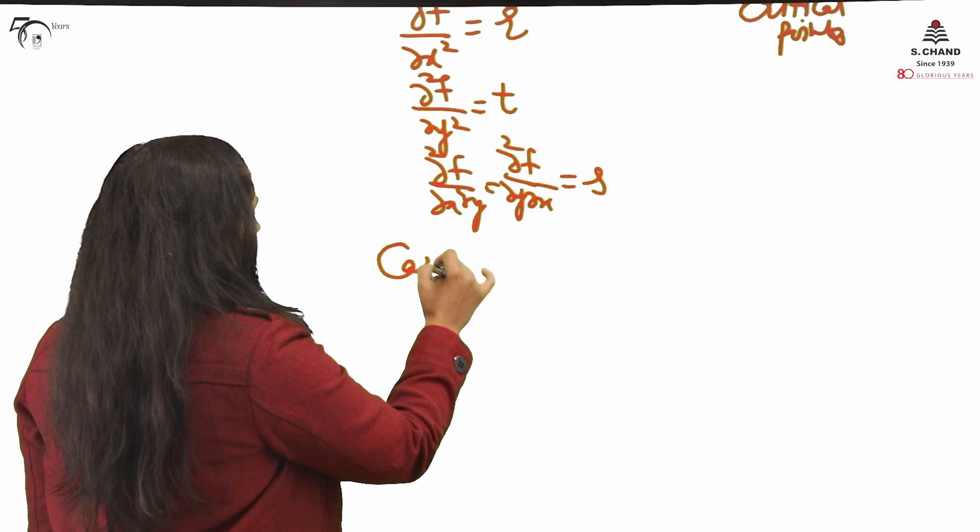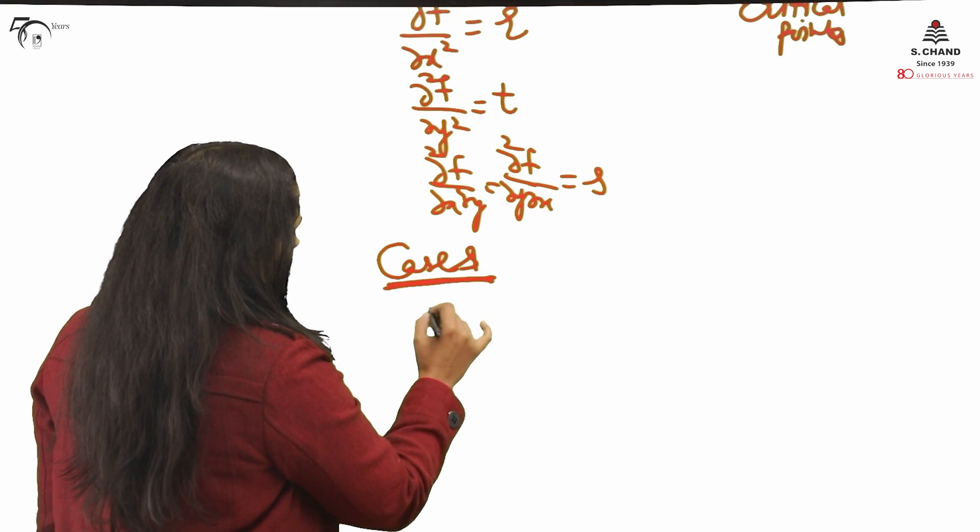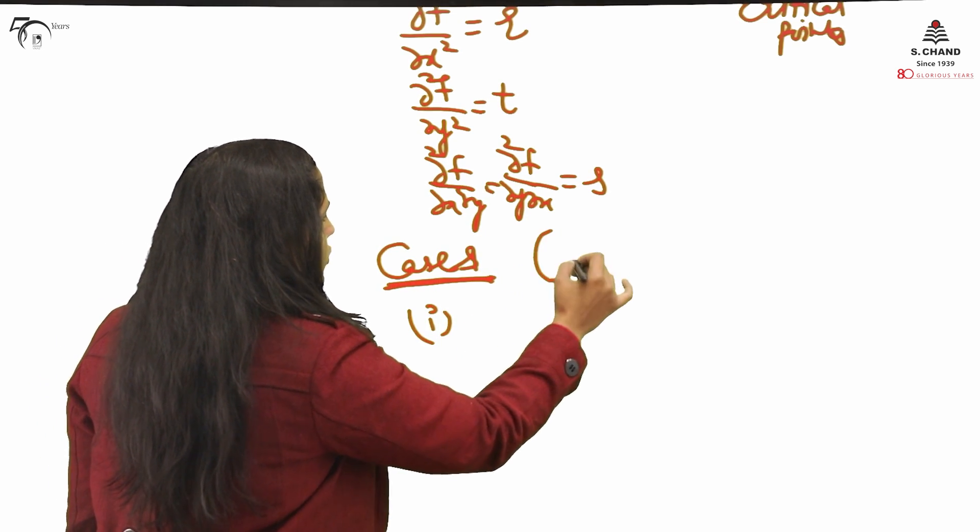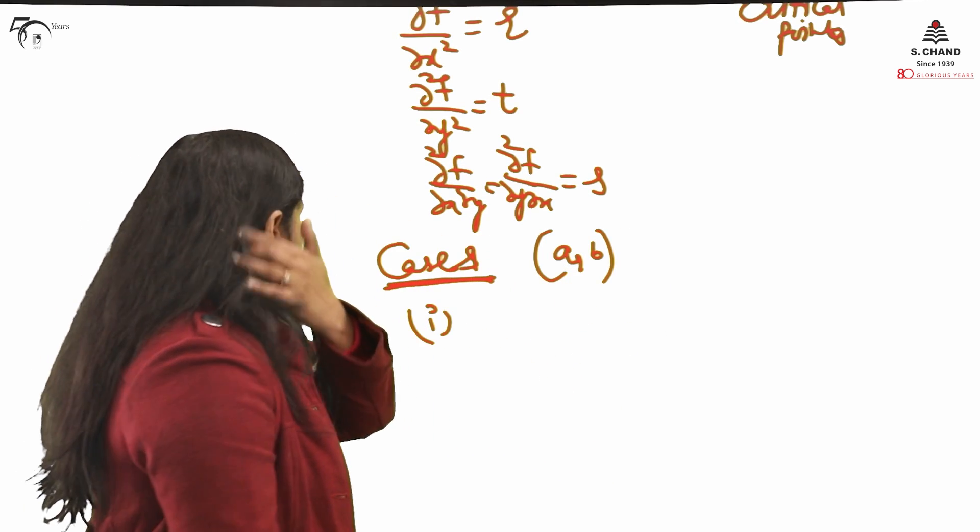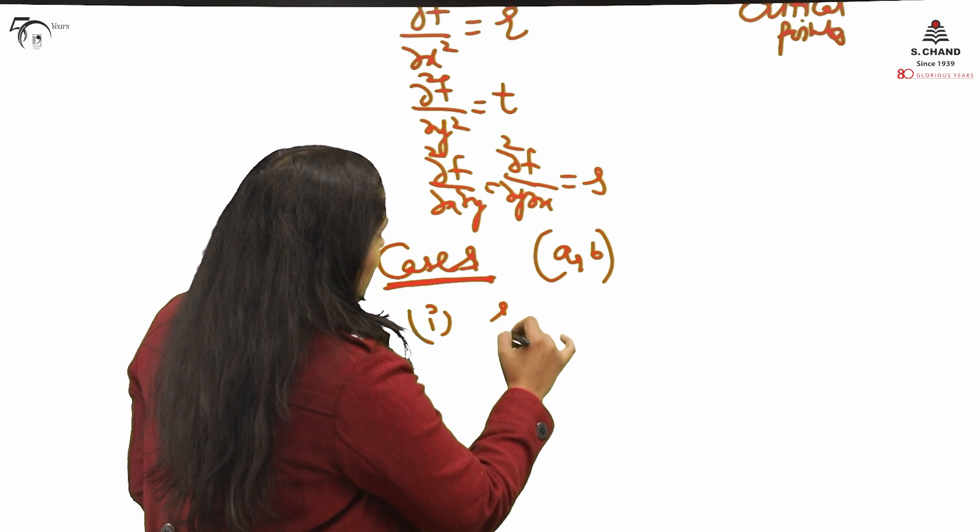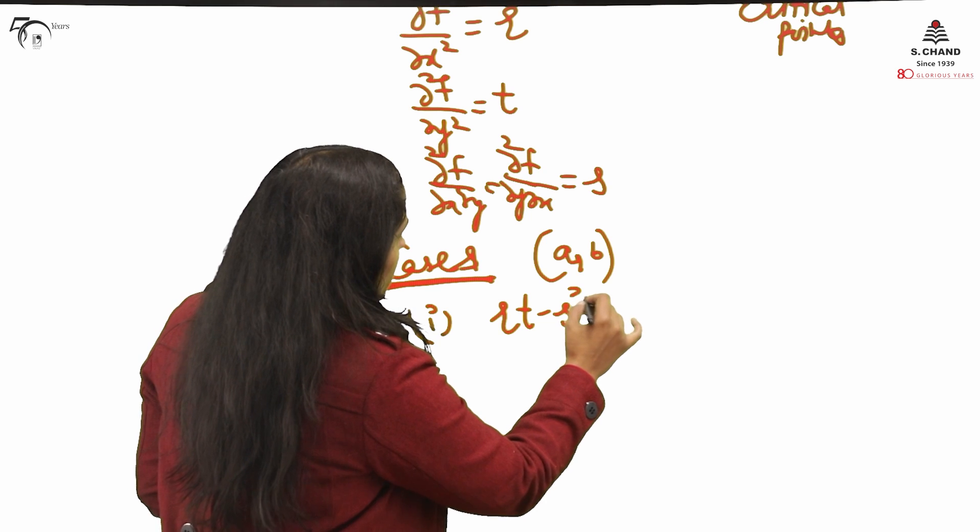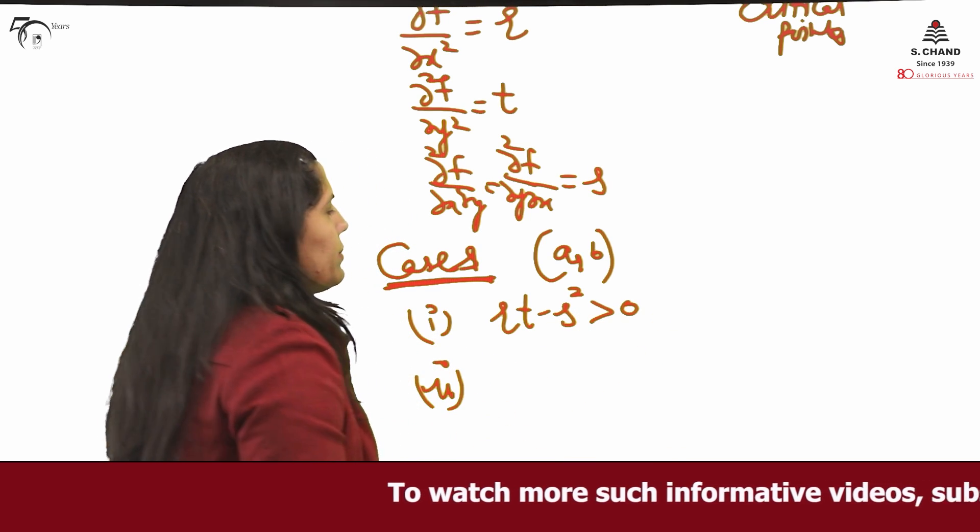After this, cases I will discuss. My first case will be at... suppose the x,y value is (a,b), some x,y value is (a,b). With the help of the example also we will understand. First I am showing you the working.